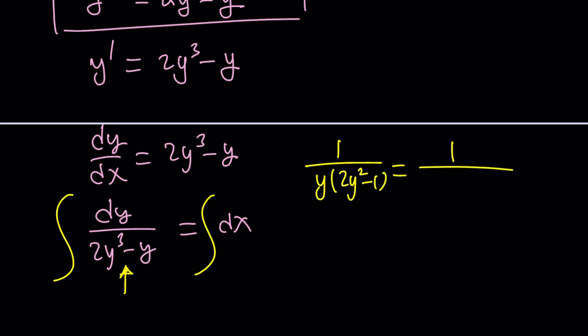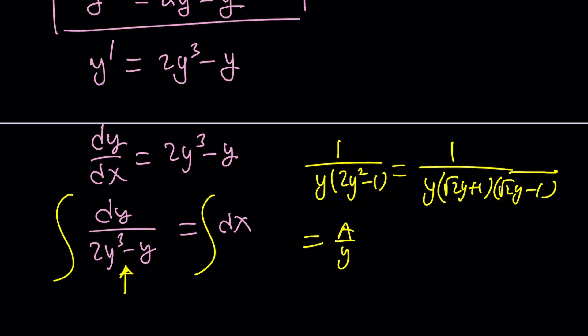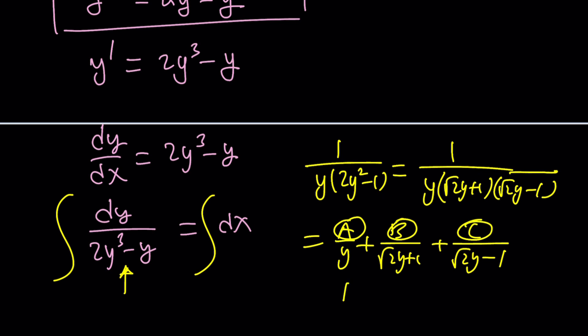The denominator factors into root-2·y plus 1 and root-2·y minus 1, giving three factors. You set it equal to A over y plus B over (root-2·y plus 1) plus C over (root-2·y minus 1), then find the undetermined coefficients A, B, and C. Each of these integrates very easily — each one is a logarithmic integral, meaning when you integrate them you get logs, since 1 over y, 1 over 2y, etc. are all essentially the same pattern. So it's fairly straightforward with the first derivative.